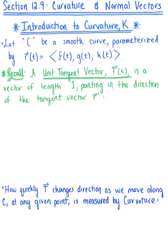In section 12.9, we are exploring curvature and the principal unit normal vector. To get us started, we are looking at an introduction to curvature, which is defined by the Greek letter kappa. Let C be a smooth curve parametrized by the vector-valued function r of t for some arbitrary parameter t. Recall that the unit tangent vector, capital T, is a vector of length 1 pointing in the direction of our tangent vector.